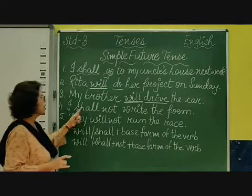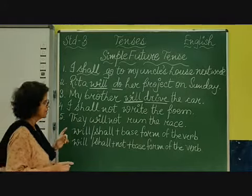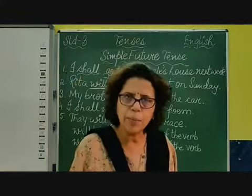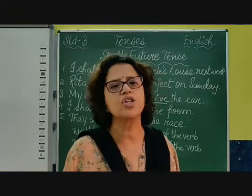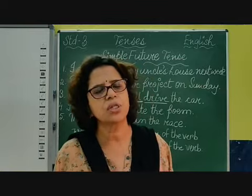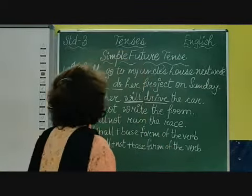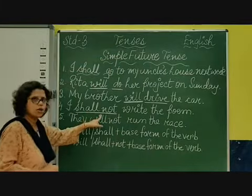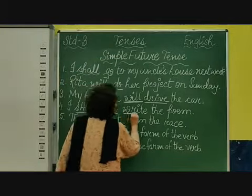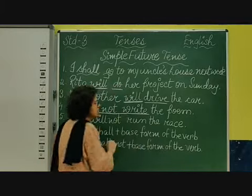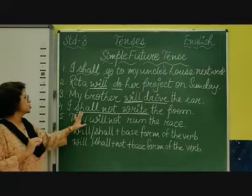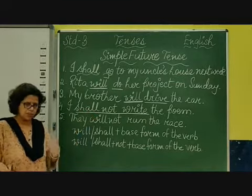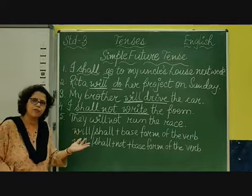Number four shows a negative sentence. 'I shall write the poem' is positive. 'I shall not write the poem' is negative. In future tense, to make a negative sentence, you just add 'not'. So 'shall not' is negative, and then 'write' is the base form of the verb. 'Shall not write' is the verb — it is a negative simple future tense sentence.